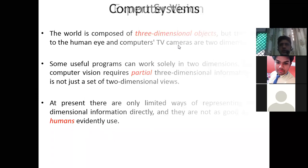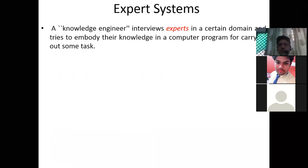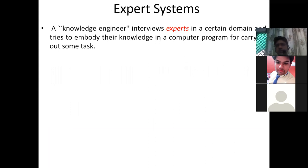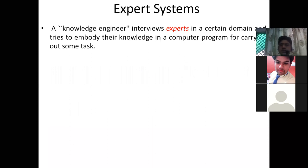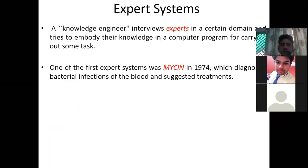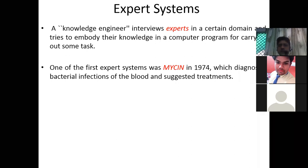The next area is expert systems. An expert system is a system that has particular domain knowledge given by knowledge engineers. A knowledge engineer interviews experts in a certain domain and tries to embody their knowledge in a computer program for carrying out specific tasks. One of the first expert systems was MYCIN in 1974, which diagnosed bacterial infections of the blood and suggested treatments — it was an attempt to replace a doctor.